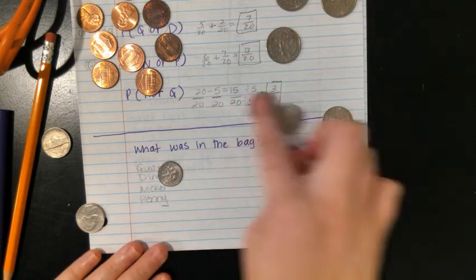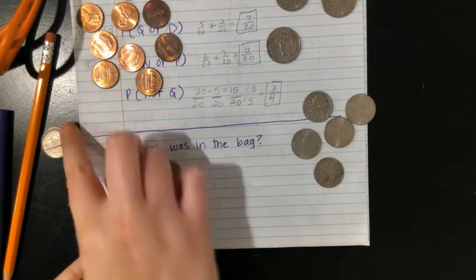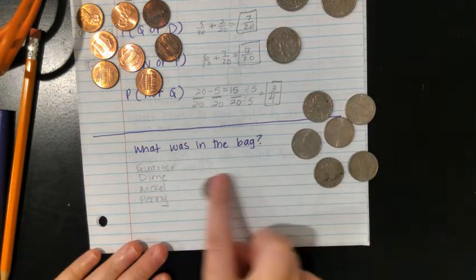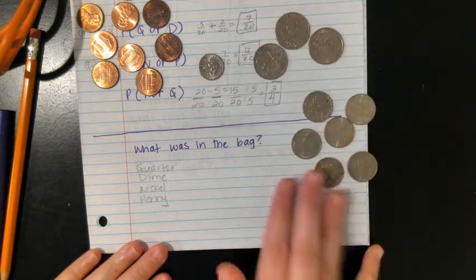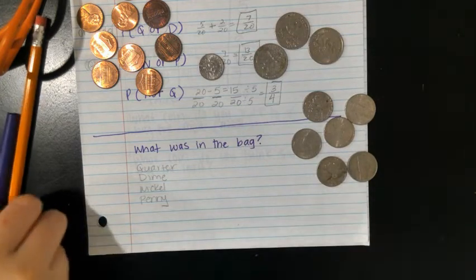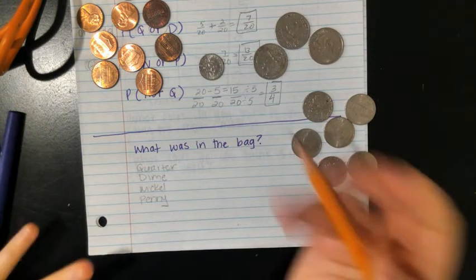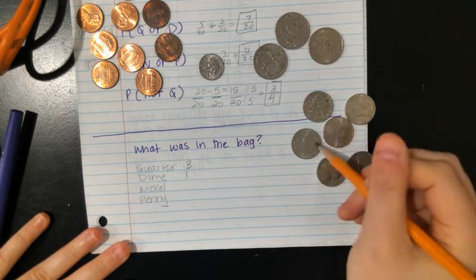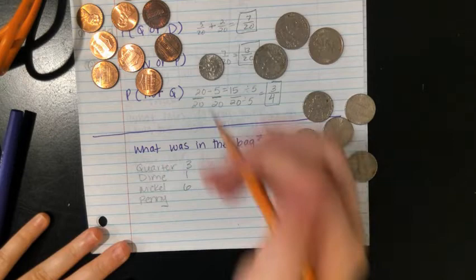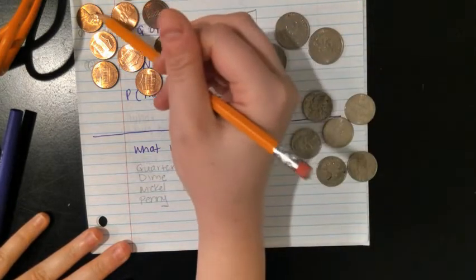So, quarters - there were three quarters. Dime - there was one. Nickels - one, two, three, four, five, six - there's six nickels.